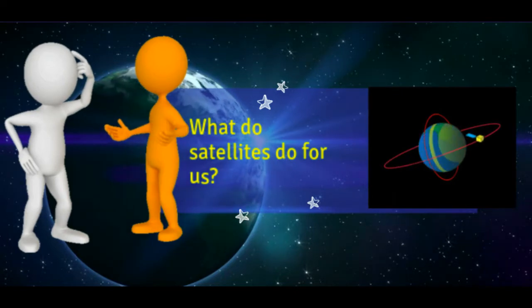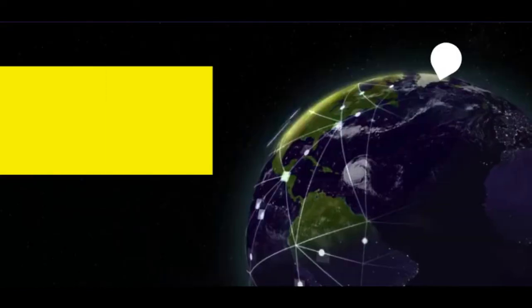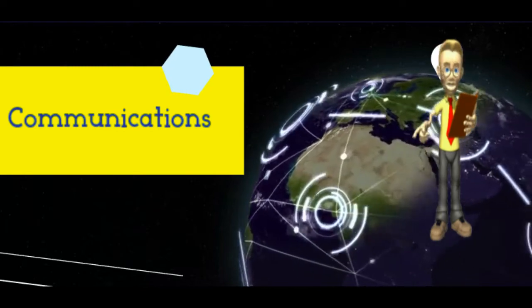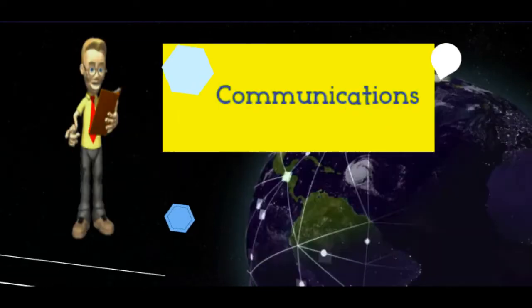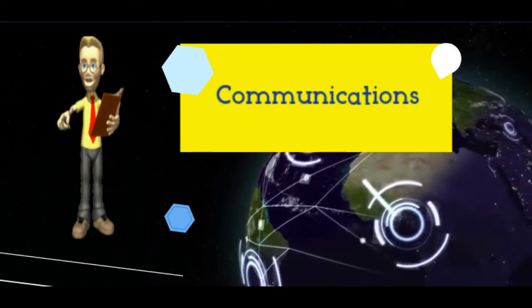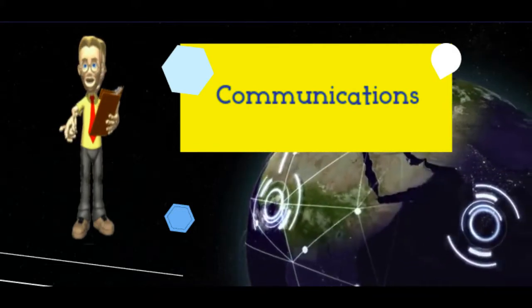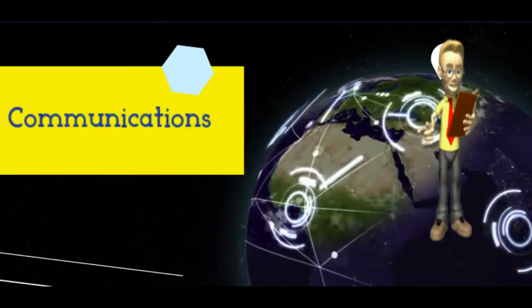The three main uses of satellites are communications. Communication satellites are essentially used to relay radio waves from one place on Earth to another, catching signals that fire up to them from a ground station or Earth-based satellite dish, amplifying them so they have enough strength to continue.